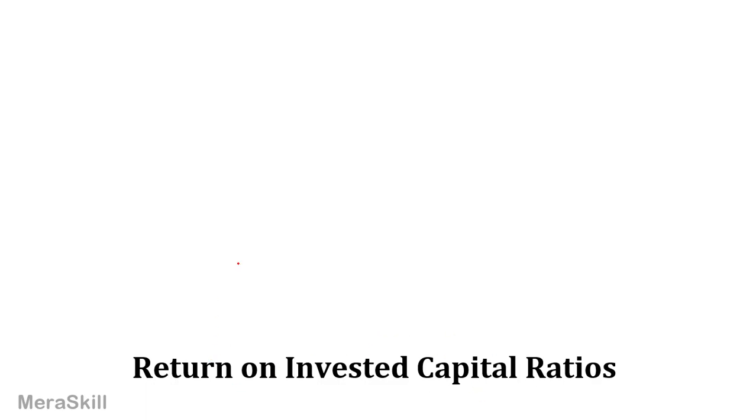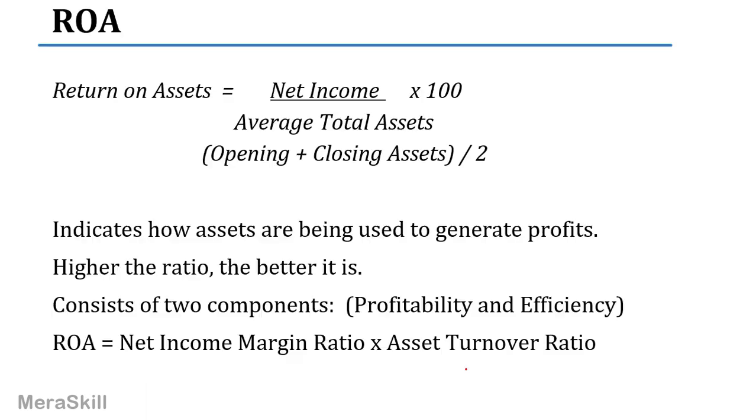Next, let us look at return on invested capital ratios. So far, the ratios we did were all income statement ratios — gross profit, net income, and operating profit as a percentage of sales. Now we will take the return, that is the income, on capital. The profits are derived from the income statement and the capital — invested capital — could be the assets or only equity shareholders, taken from the balance sheet. These are kind of mixed ratios, mixed between two financial statements.